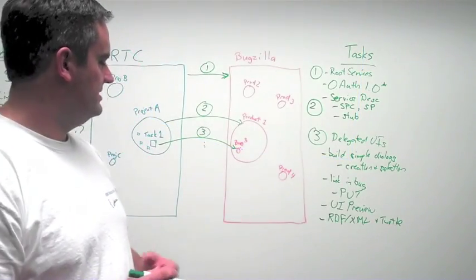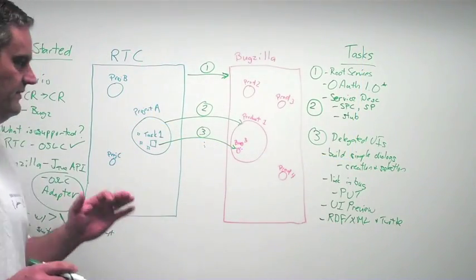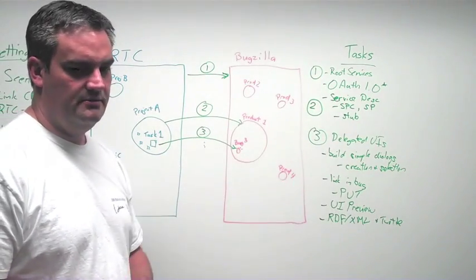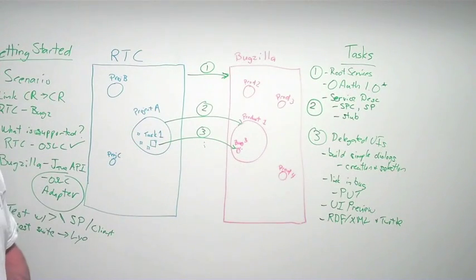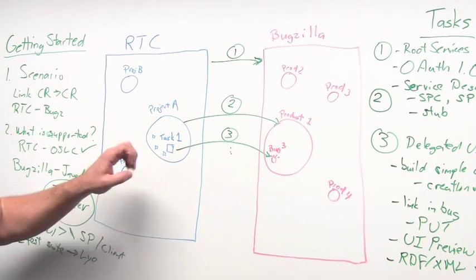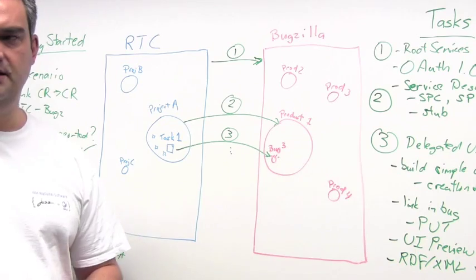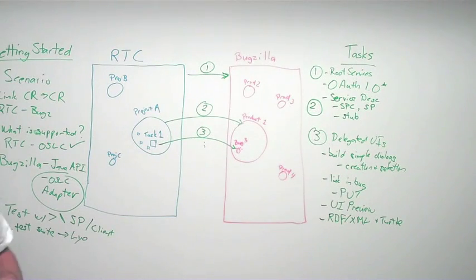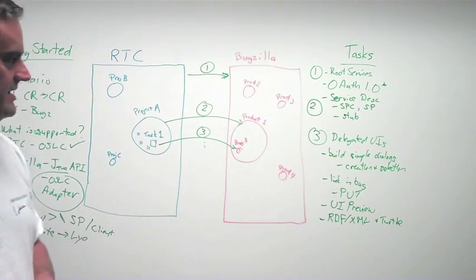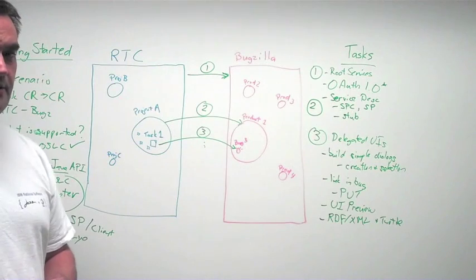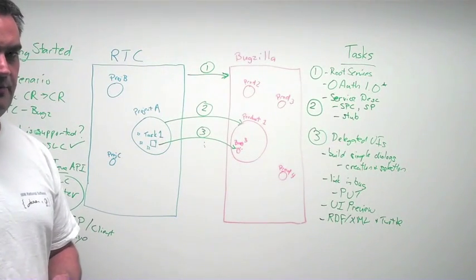So with that, that gives us an idea of how to get started, a few other steps to help test and validate our implementation. A quick run through of the steps needed to have a simple scenario supported here, with linking change request from a Rational Team Concert system over to a Bugzilla system, which has bugs in it and its own change request, using the OSLC change management version 2 interface to provide that integration. Thank you for your time. Look for more information at open-services.net to help you with your implementations.